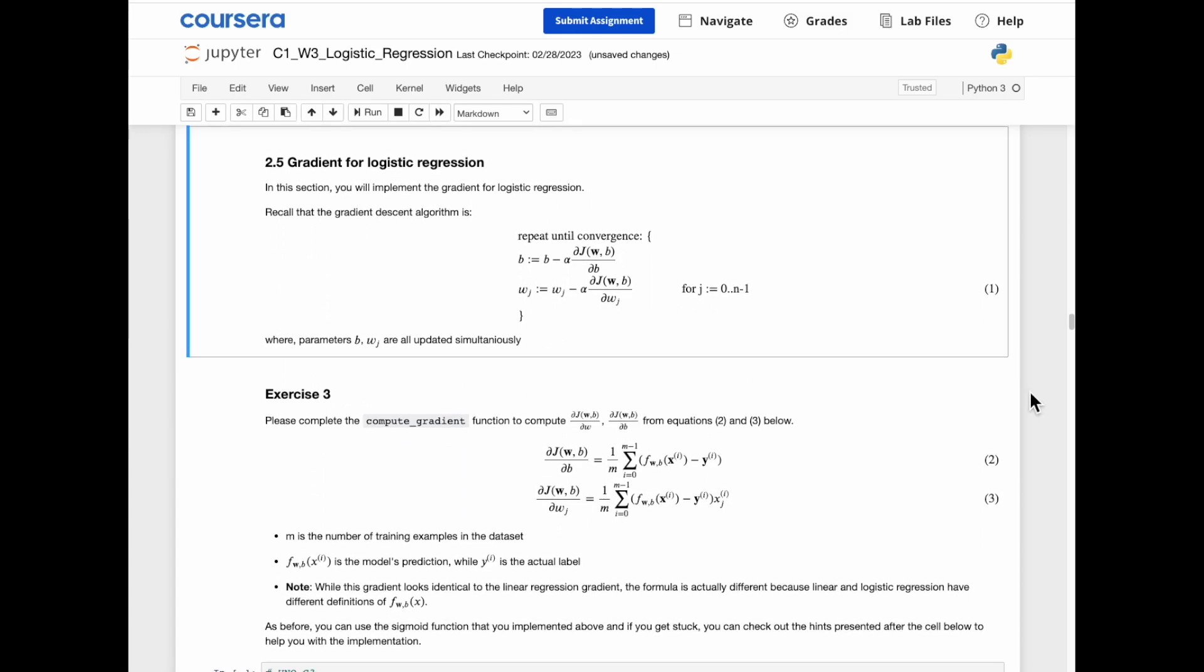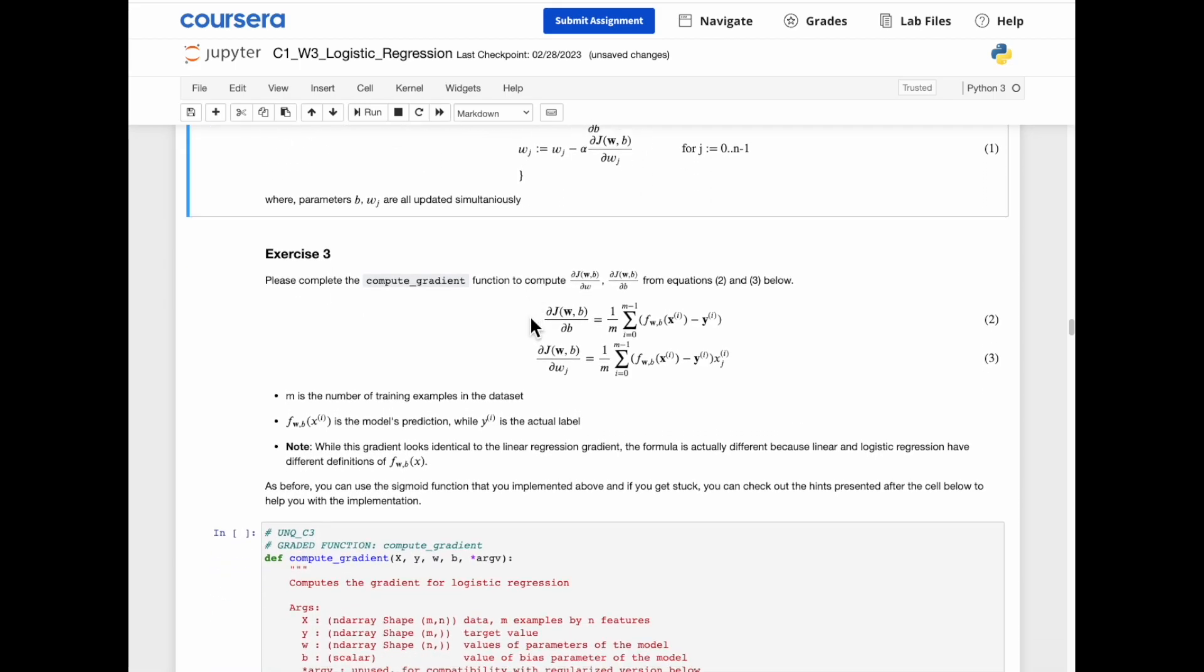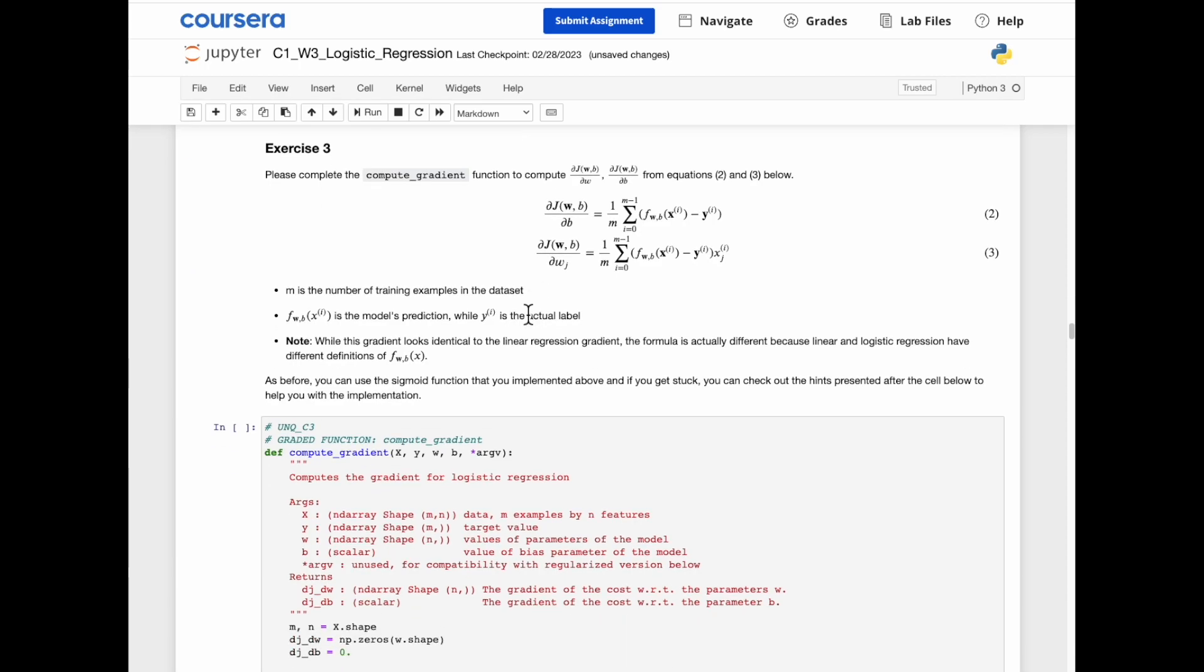Now we're going to go over gradient for logistic regression. Recall that we used simultaneous update on parameters b and w in our gradient descent algorithm. Now we're going to compute the gradient function using these two equations.